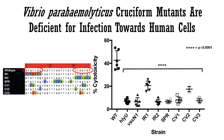These results allow us to pursue more questions such as: do the mutants affect the cruciform formation, or do they affect the proteins that bind to the inverted repeats?